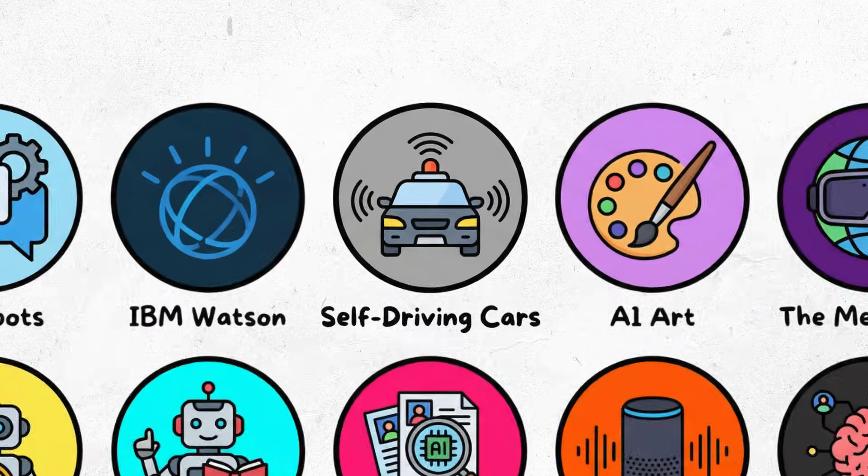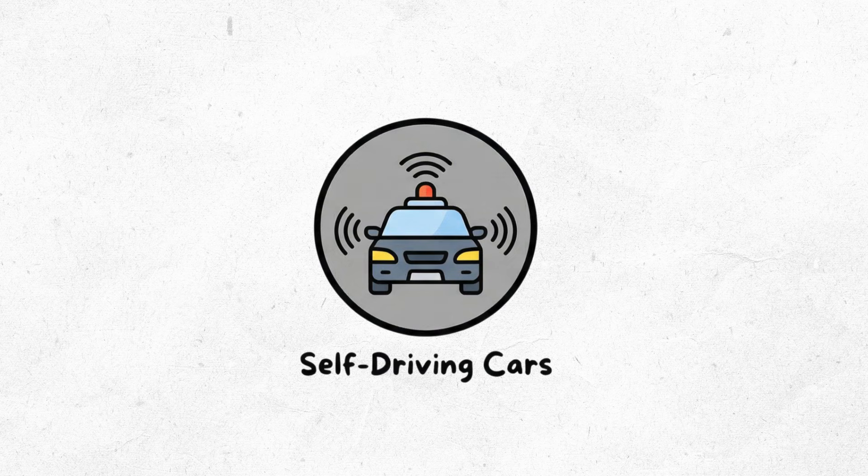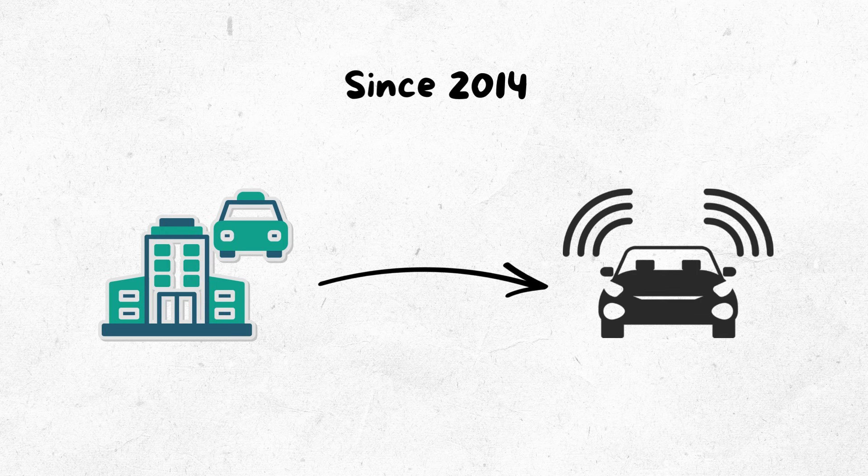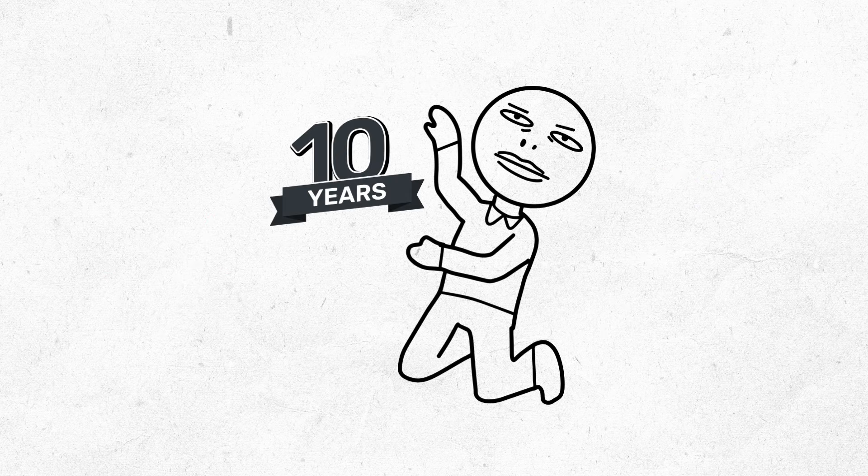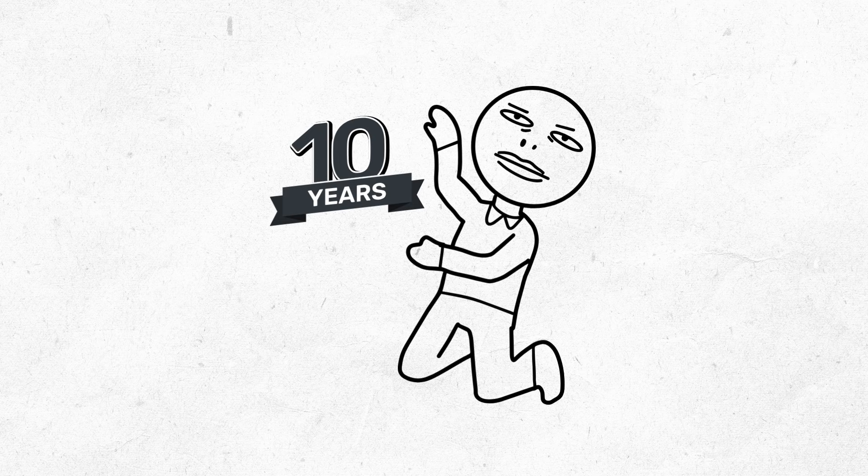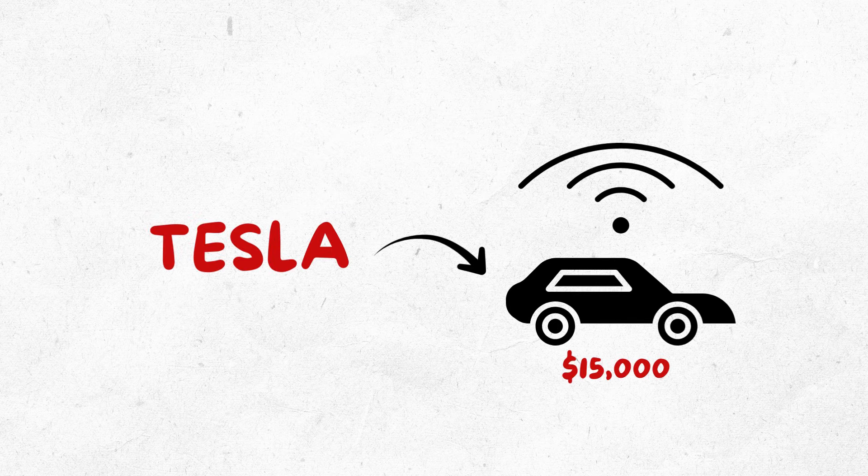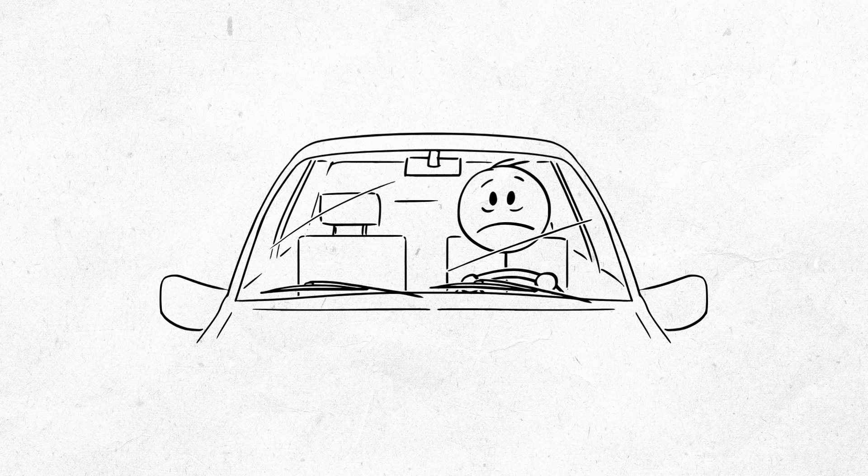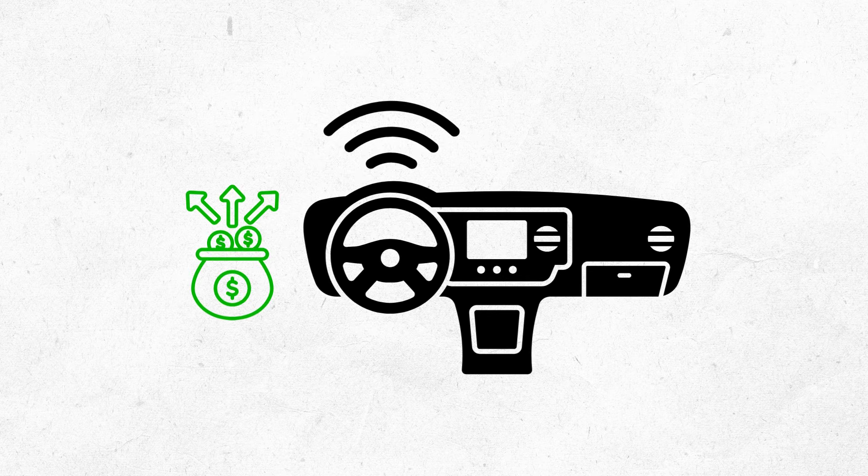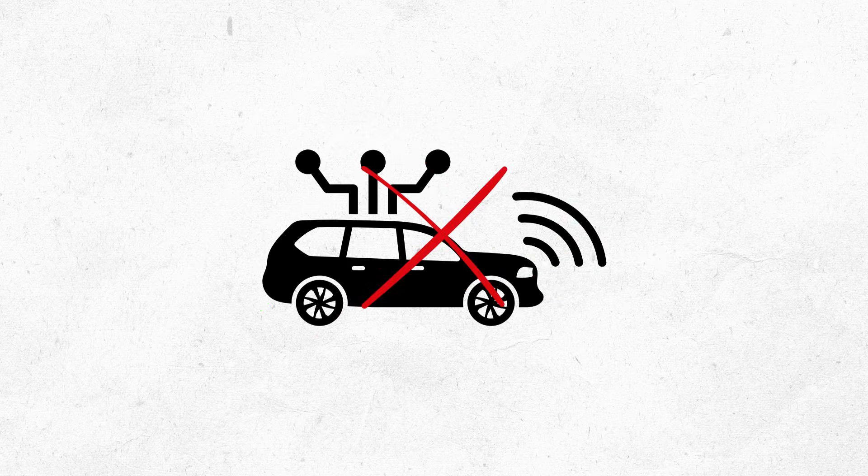Self-driving cars. Always coming. Never here. Since 2014, companies promise self-driving cars are just 5 years away. It's been over 10 years. We're still driving ourselves like cavemen. Tesla sells full self-driving for $15,000. You still have to fully drive the car yourself. That's expensive cruise control. Not self-driving.